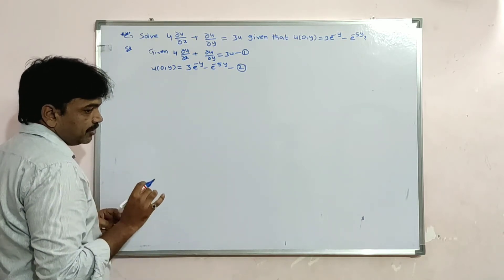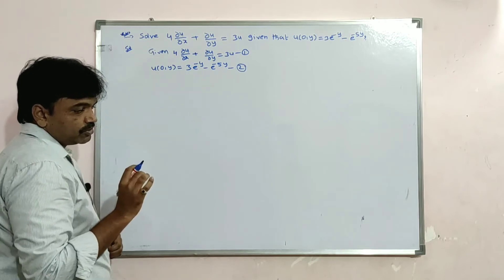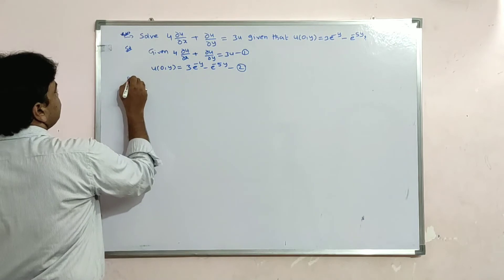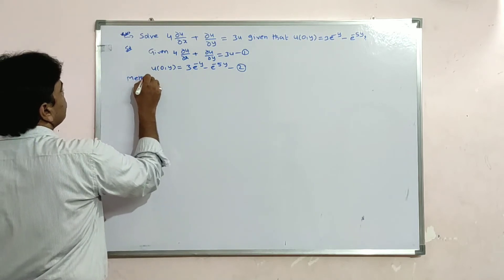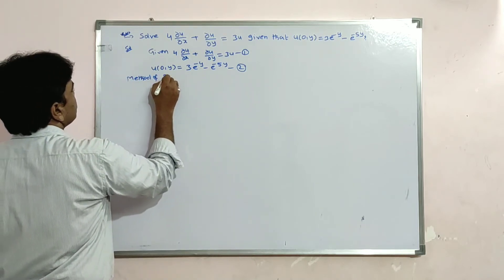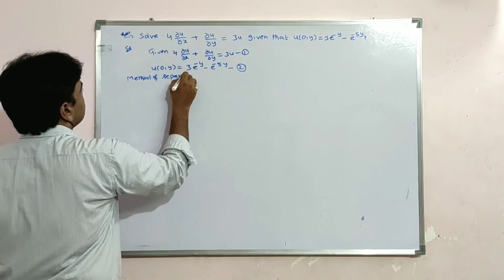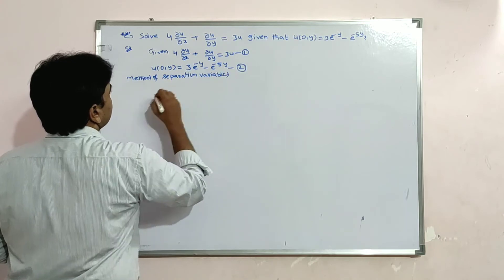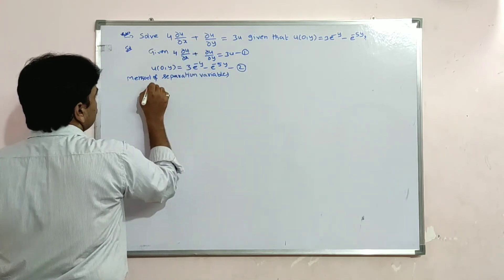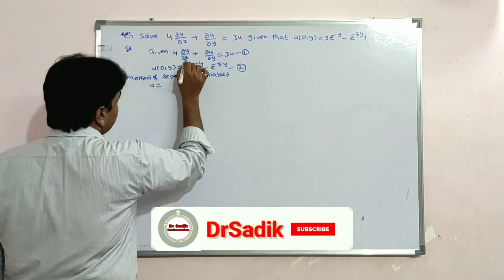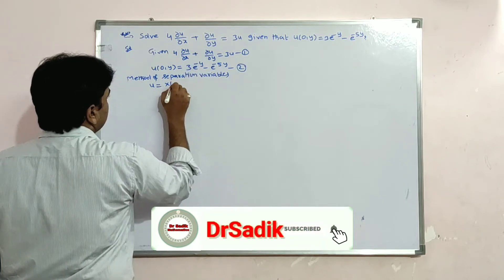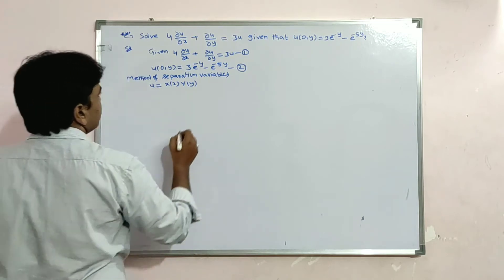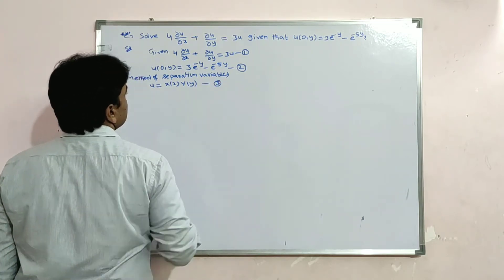We apply the method of separation of variables. The dependent variable u equals a product of the independent variables x and y, so u = X(x)·Y(y). Say this is equation 3.